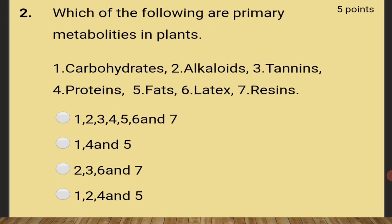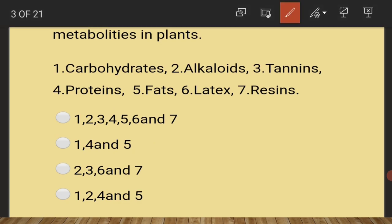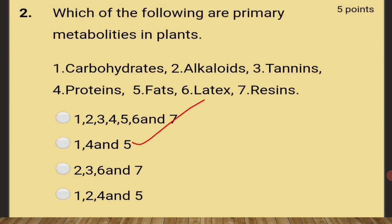Which of the following are primary metabolites in plants? Out of the choices given, carbohydrates, proteins, and fats — that is options 1, 4, and 5 — are the primary metabolites in plants.